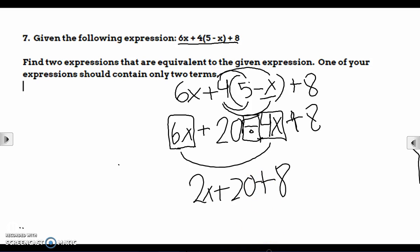So then you would have to... Since these are like terms, you would box these two together. And then you would have to add these which would give you 28. And then you would just have to add 28 with 2x.